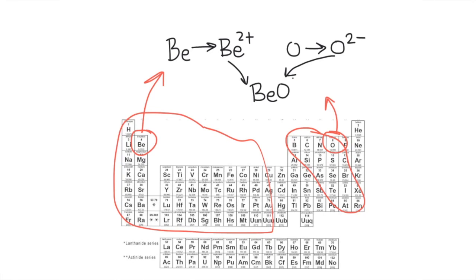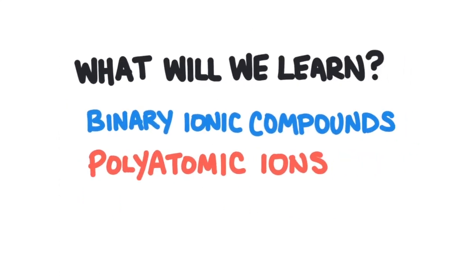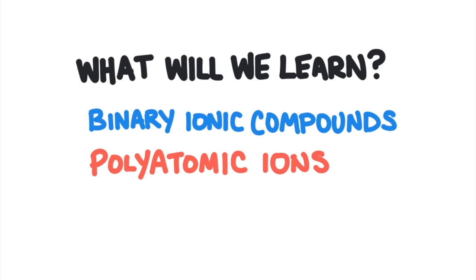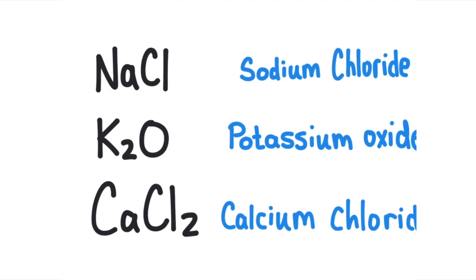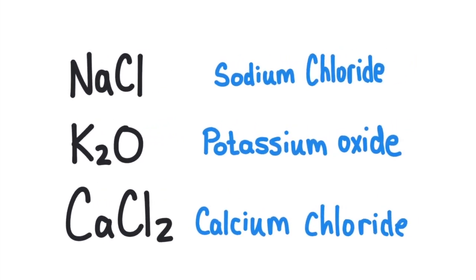In this video, we're going to first learn how to name binary ionic compounds, which are very simple compounds composed of two elements. Then we'll look at compounds that form with polyatomic ions. Let's start with those binary ionic compounds. Binary means two things — these are compounds formed when two elements come together.